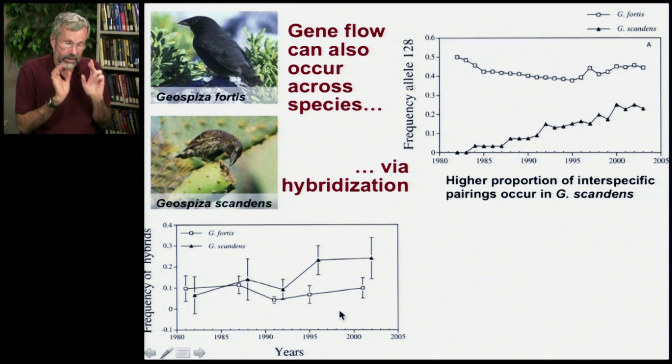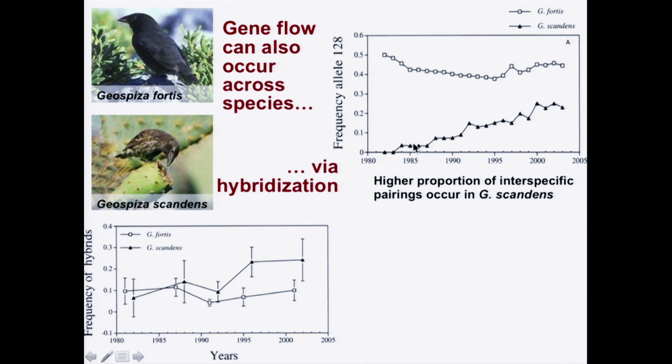Okay? But as a result of this hybridization, which seems only to have happened in the 1980s, certain alleles have changed. So, here is an allele called allele number 128, which is missing altogether in scandens in the 1980s, but because of hybridization with fortis, it's now increased to about 25 percent.